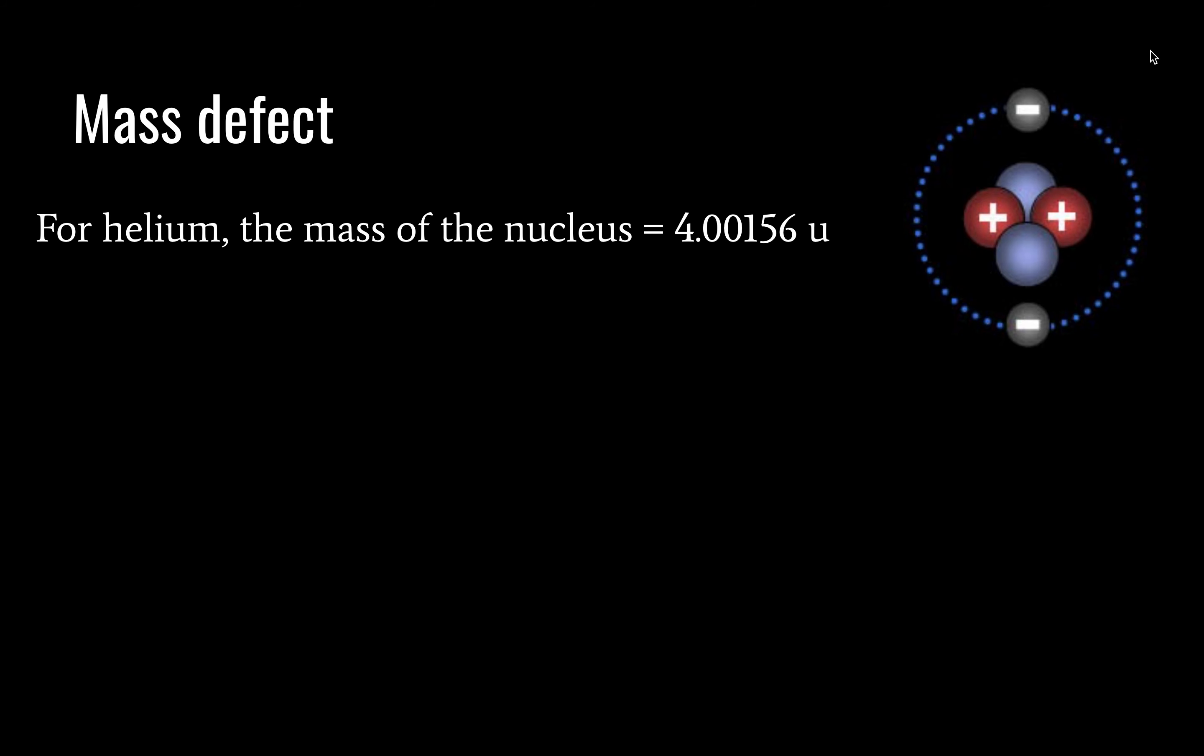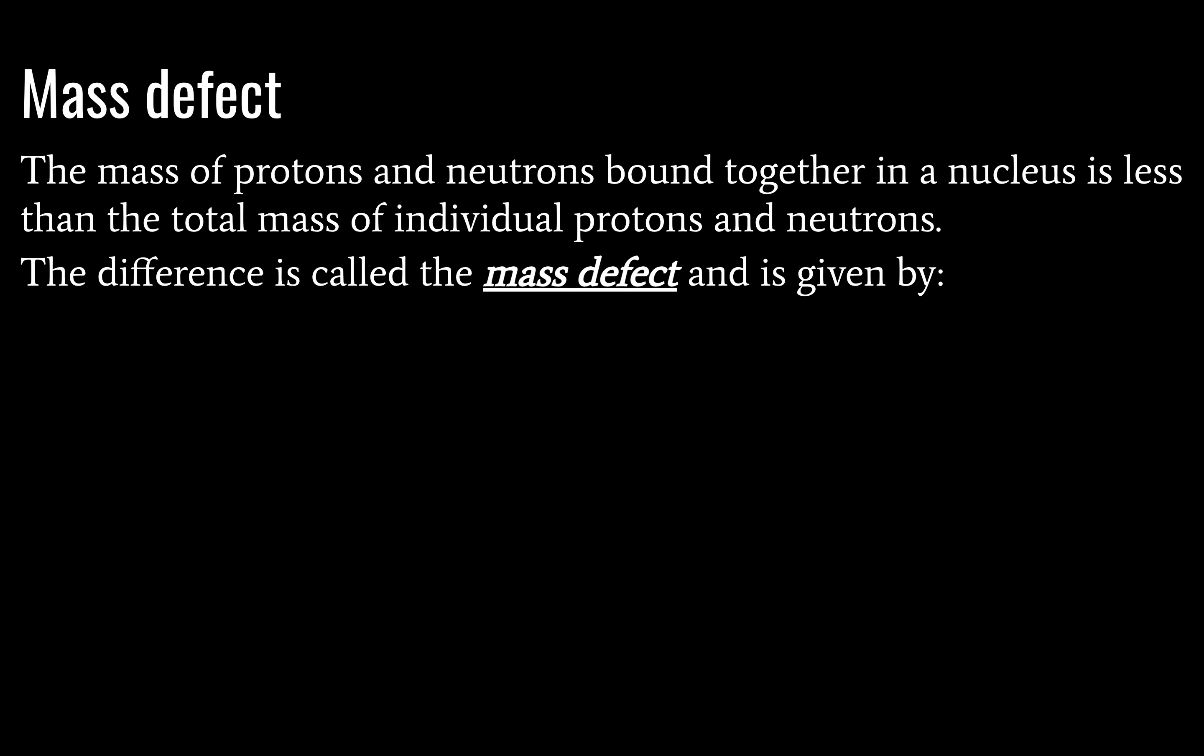Mass defect. Here we have a helium atom, and the mass of the nucleus is given as 4.00156 unified mass units. However, oddly, if we look at the mass of two protons and two neutrons all separated, what we find is that the total masses will have a slightly larger value, or even a significantly larger value. Question, where is the missing mass? If you want to discuss it for a minute, you could pause the video here, and I might even hum the Jeopardy theme song while I do that.